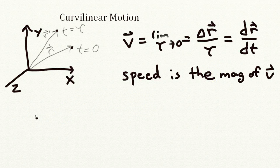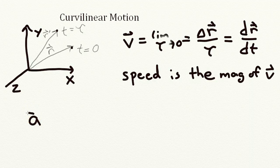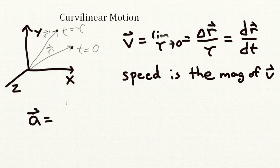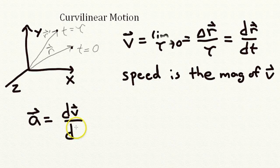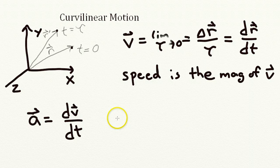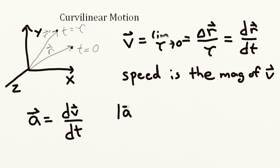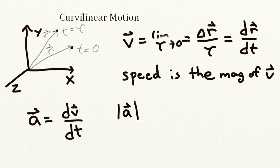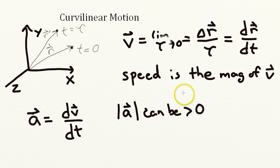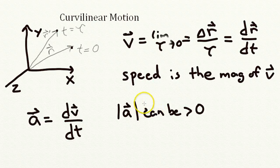We can also write the acceleration vector as the time derivative of the velocity vector. Now, one interesting thing to note here is that the magnitude of the acceleration vector can be greater than 0 even when there's no change in the speed.